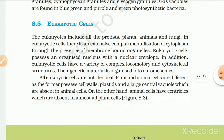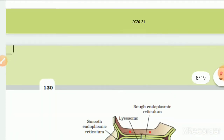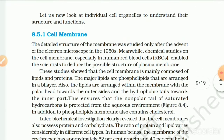8.5 Eukaryotic Cell. The eukaryotes include all the protists, plants, animals and fungi. In eukaryotic cells, there is extensive compartmentalization of cytoplasm through the presence of membrane-bound organelles. Eukaryotic cells possess an organized nucleus with a nuclear envelope. In addition, they have a variety of complex locomotory and cytoskeletal structures, and their genetic material is organized into chromosomes. Plants and animal cells differ — plant cells have a cell wall, plastids and a large central vacuole, while animal cells have centrioles, which are absent in almost all plant cells.